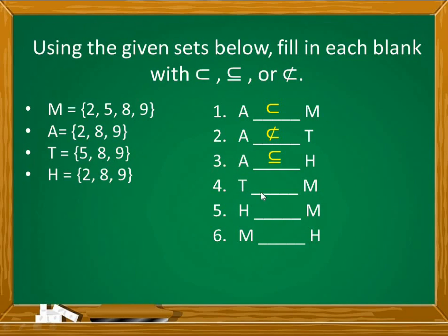Number 4, set T blank set M. Let us compare their elements. T has elements 5, 8, and 9. Are 5, 8, and 9 present in set M? Yes! But not all elements of M are in T — M has extra elements. So it is a proper subset. Number 5, set H blank set M. Are all elements of H — 2, 8, and 9 — in M? Yes! But M has extra elements not in H. So it is a proper subset.